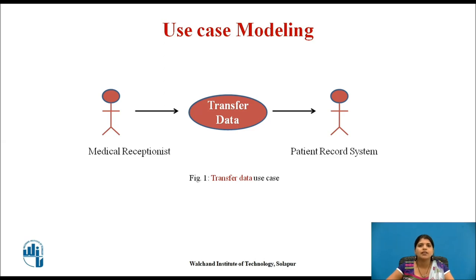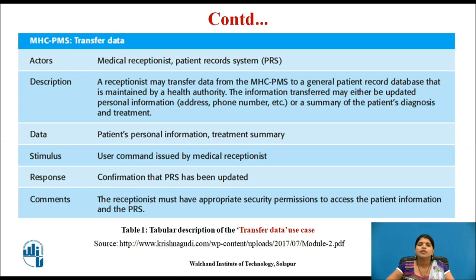This figure shows a use case from the MHC-PMS that represents the task of uploading data from the MHC-PMS to the PRS. Arrows in the UML indicate the direction of flow of messages. This figure also shows a tabular description of the transfer data use case. In such cases, you may develop several diagrams, each of which shows related use cases as given in the table.